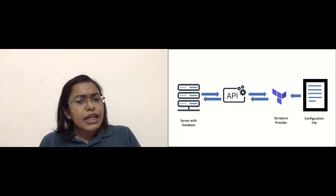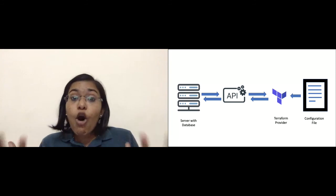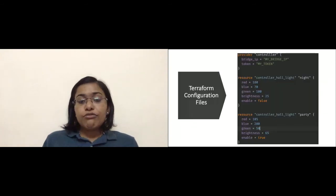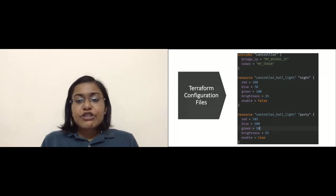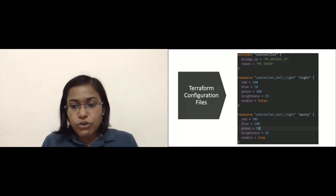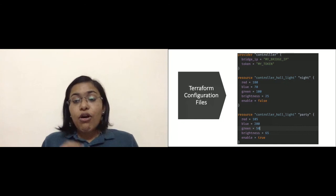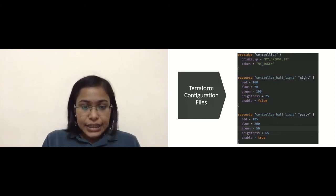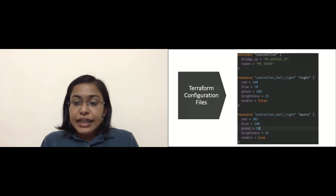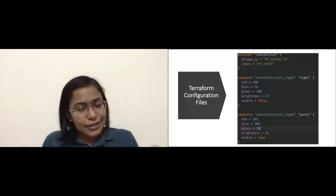For example, I have a smart house. Through a controller, I can control the light, color, and brightness of my whole lighting system. If the controller is a Terraform provider, the configuration file would look something like this: the provider section uses an IP and token to establish a connection between Terraform and the controller. Then two resource blocks will be created, which will create two objects of the type hall lighting — one named night and the other named party. At this moment, party is enabled as true. Later on, I can modify this file by setting the party object's enable property to false.